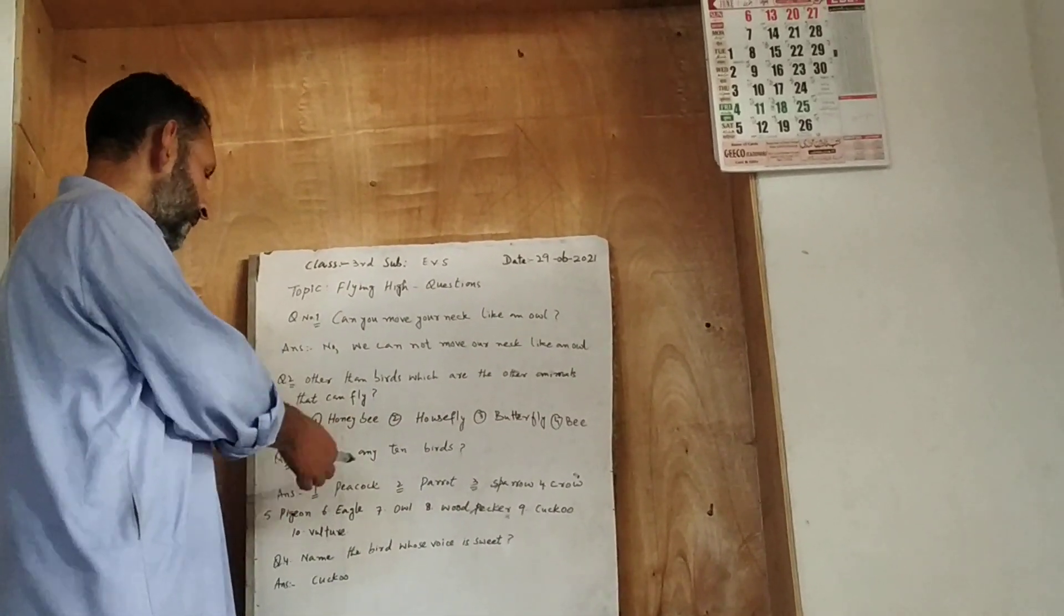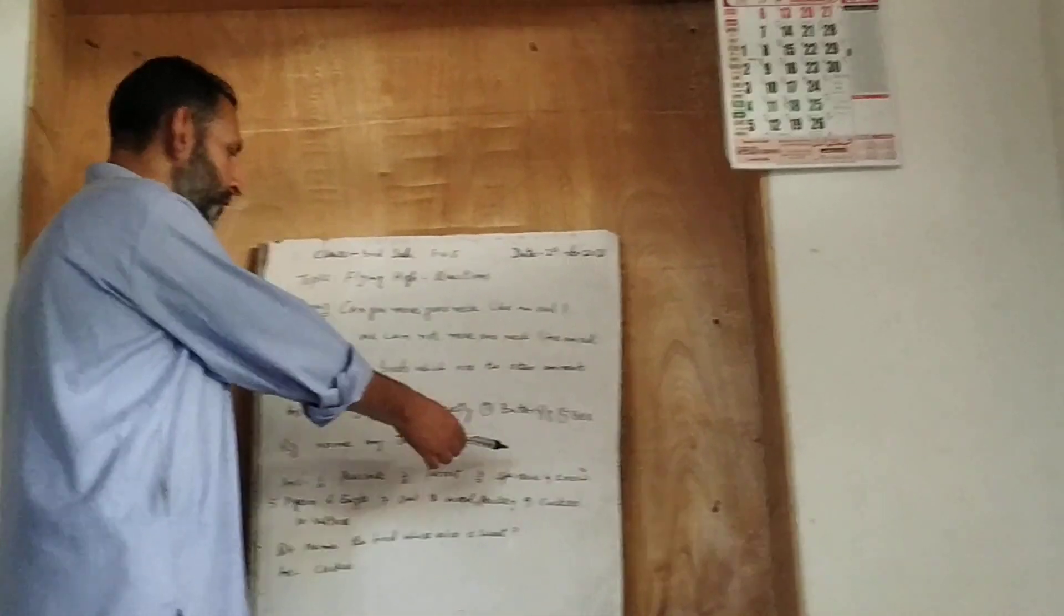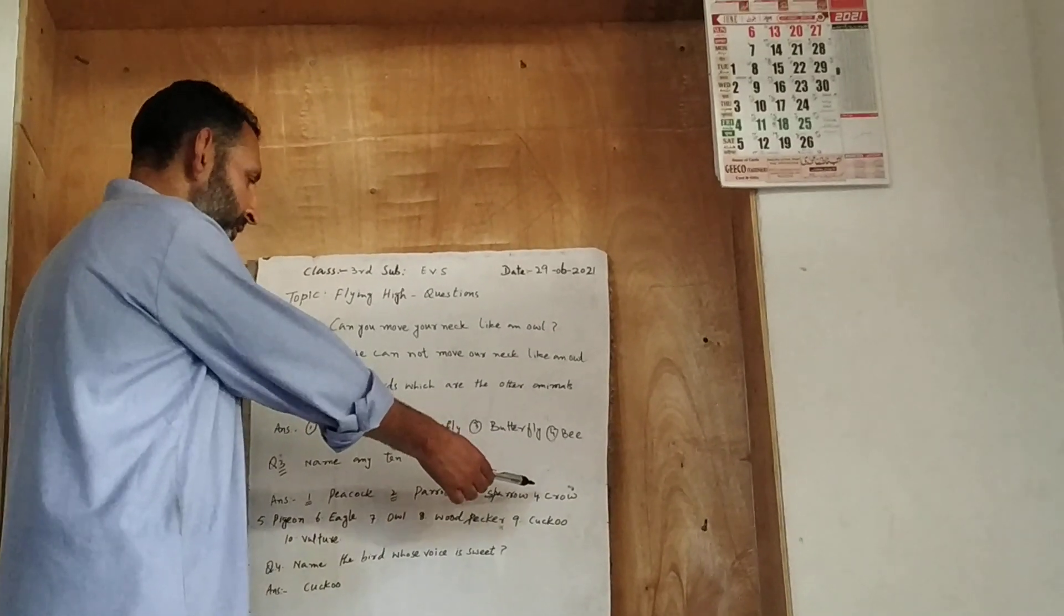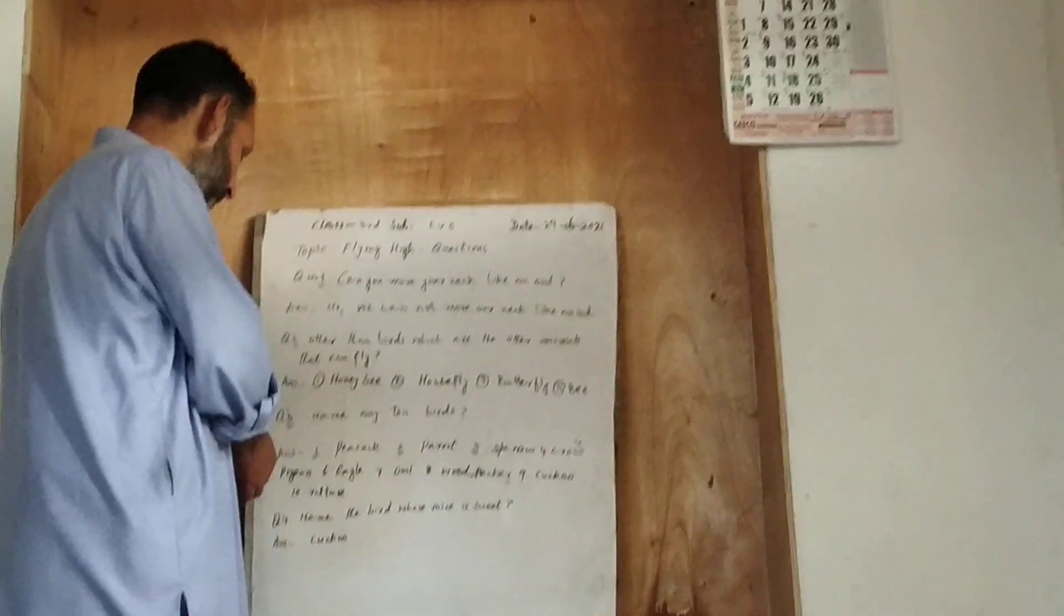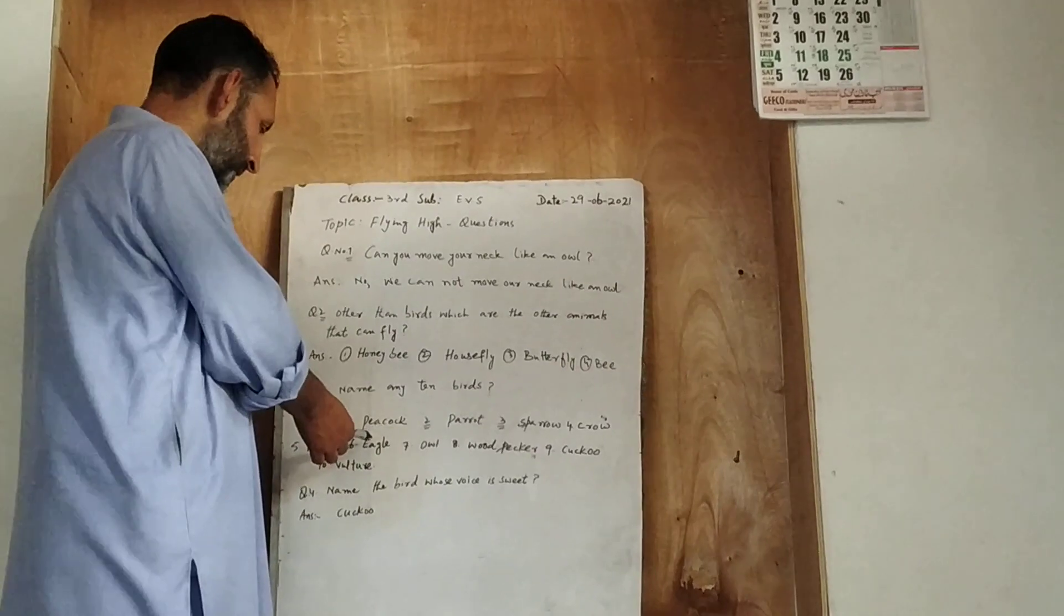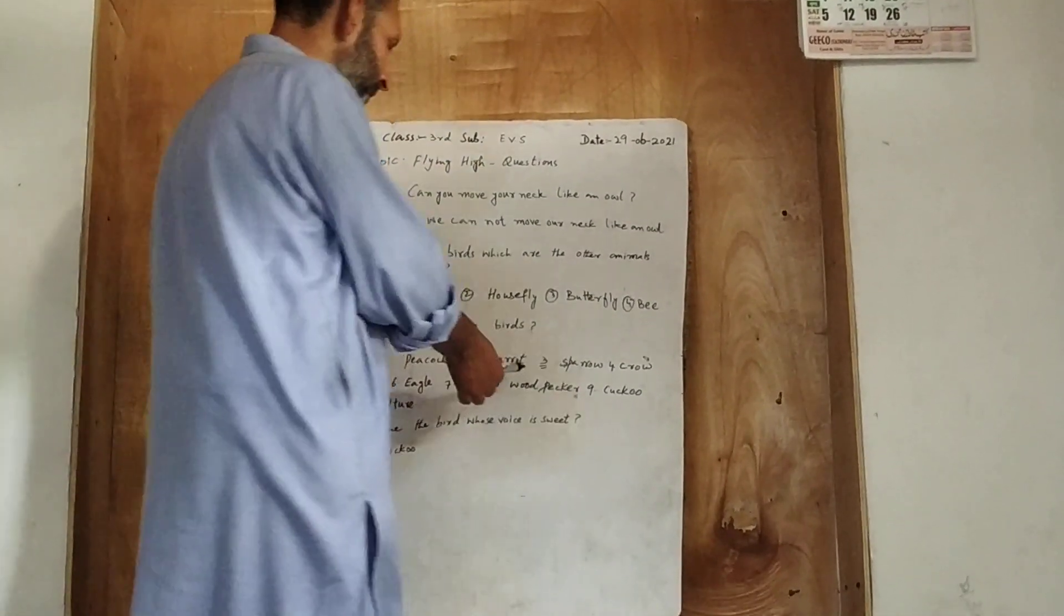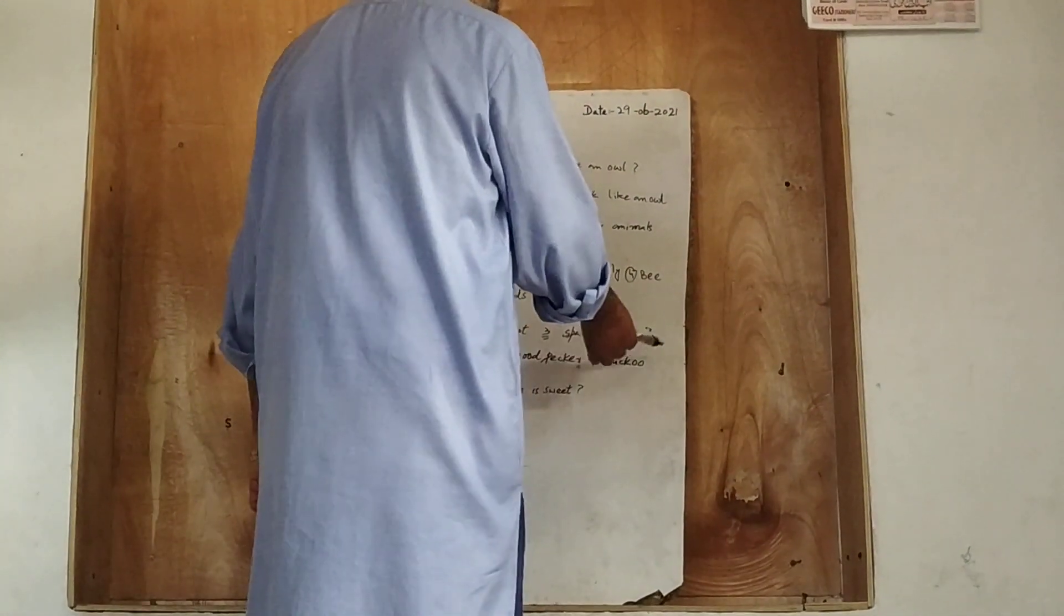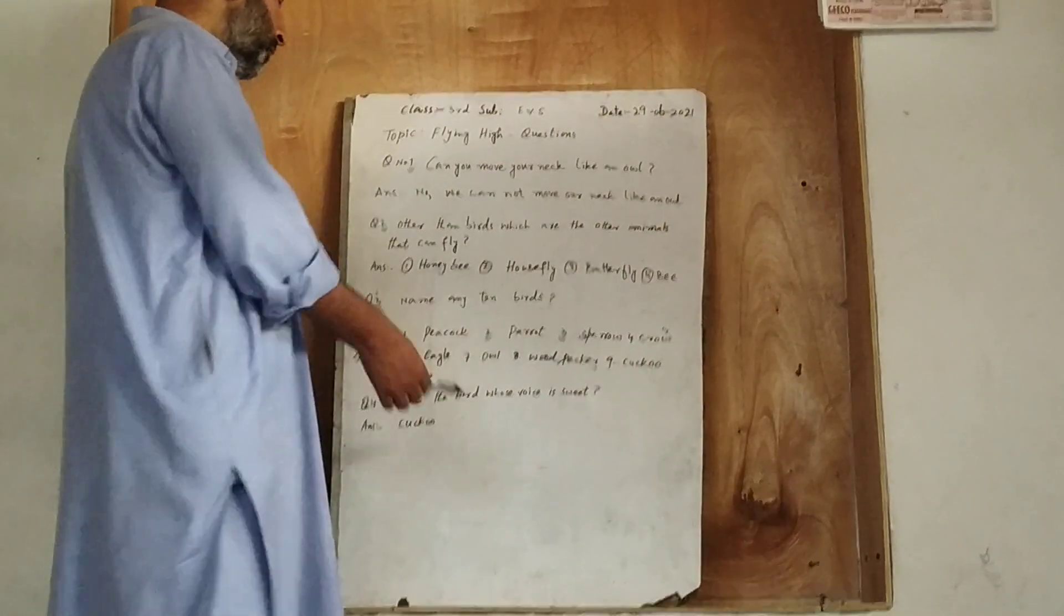Name ten birds. Number one, peacock. Number two, parrot. Number three, sparrow. Number four, crow. Number five, pigeon. Six, eagle. Seventh, owl. Eighth, woodpecker. Ninth, cuckoo. And tenth bird, vulture.